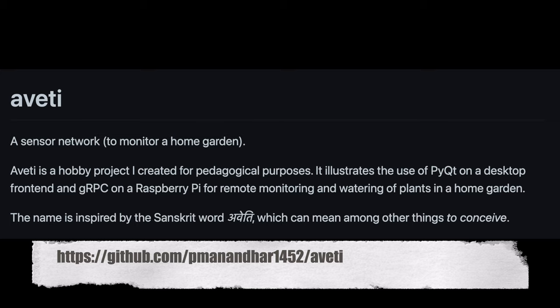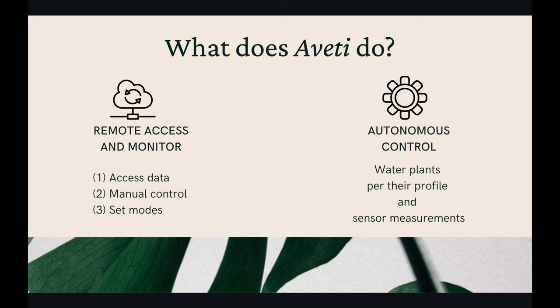Now back to the system we are describing in this talk. I named the system AVETI. For those who are not familiar with engineering projects, the system designers often name their projects and products to refer to them conveniently. The code for the project is open source and is available in the linked GitHub address. The two main functional areas of AVETI are to continuously monitor plants and provide them with the water they need automatically. Another function is for the data on temperature, humidity, light, and soil conditions to be available for remote monitoring and to be able to perform manual interventions remotely if needed.